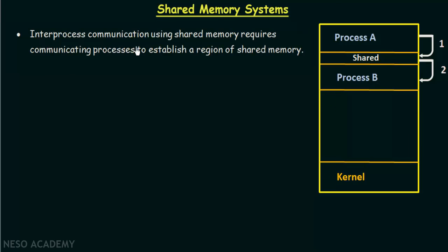Inter-process communication using shared memory requires communicating processes to establish a region of shared memory. Whenever two or more processes want to communicate using the shared memory system, they need to establish a region of shared memory like the one shown in this figure. This region is shared between process A and B, so whatever process A puts here, B can read, and whatever B puts here, A can also read.